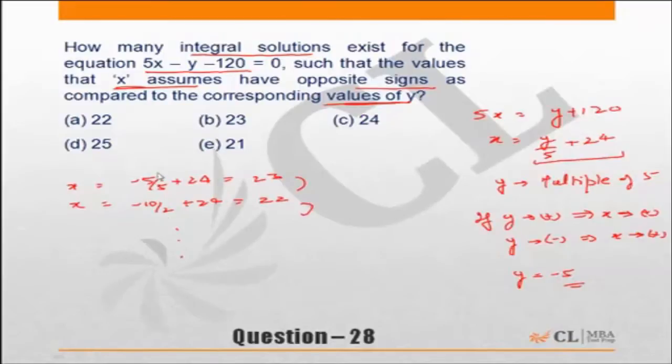Till the time y/5 is -23. Can y/5 be -24? If y/5 is -24, then x will become 0.